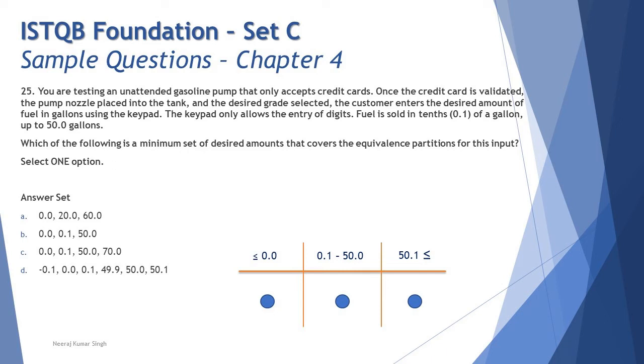Putting it all together, the right answer is A: 0.0, 20.0, and 60.0 is the right set of minimum inputs which will cover all the partitions. I hope that makes sense to all of you.